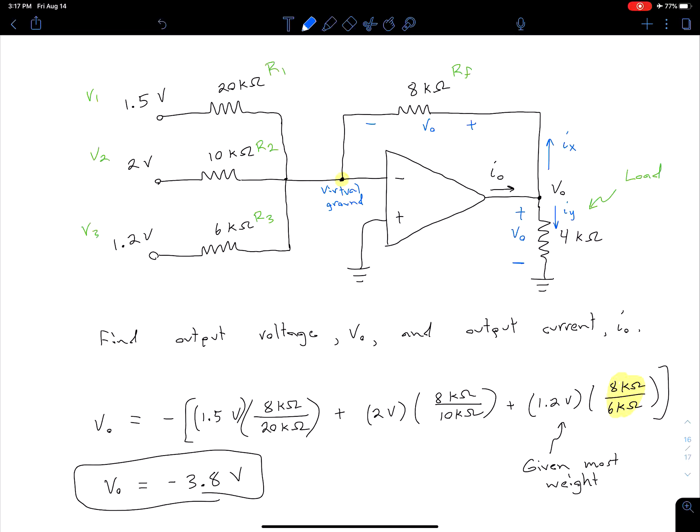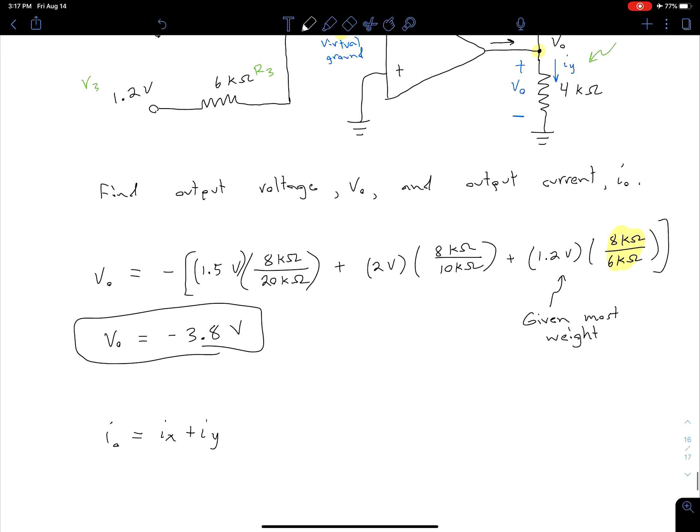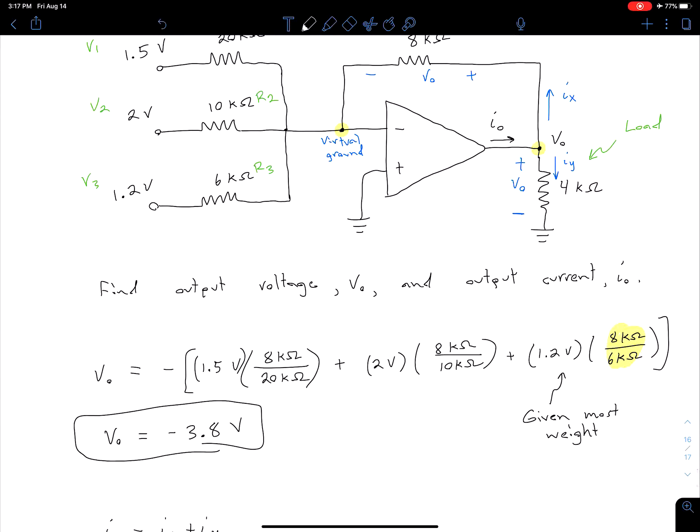First of all, we can do a KCL at this node right here, and we see we have I_out coming in and I_X and I_Y coming out. So we can say I_out equals I_X plus I_Y. Well, now we can just use Ohm's law to get those two currents in terms of our V_out because we already know our V_out value here.